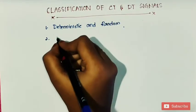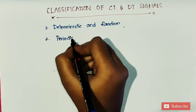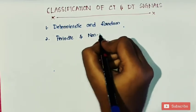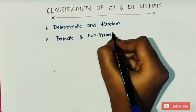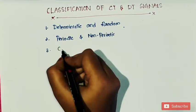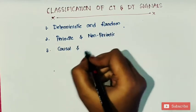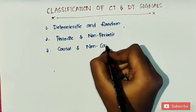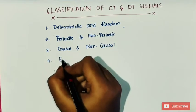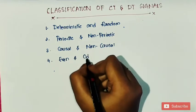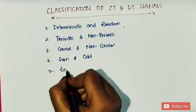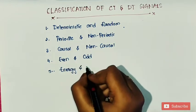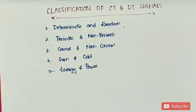The next classification is periodic and non-periodic. The third one is causal and non-causal. The fourth one is even and odd. The fifth one is energy and power. These are the different types of signals classified based on continuous and discrete time signals. In today's session we will discuss the first few.